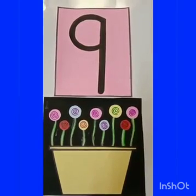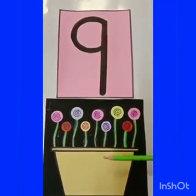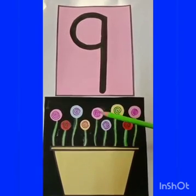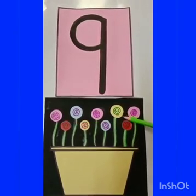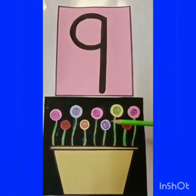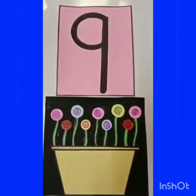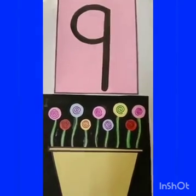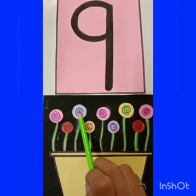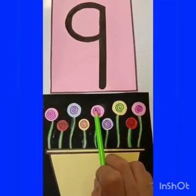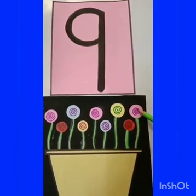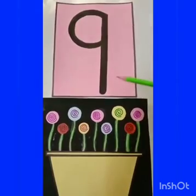Children, do you know what this is? This is a flower pot. Yes, this is a flower pot. Wow, there are many beautiful flowers! But how many flowers are there? To know it, we have to count them. Let's count together: one, two, three, four, five, six, seven, eight, nine. So how many flowers are there? There are nine flowers.